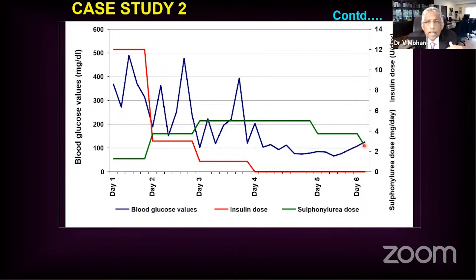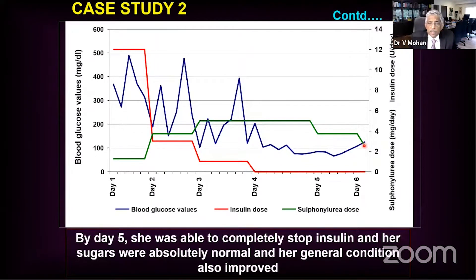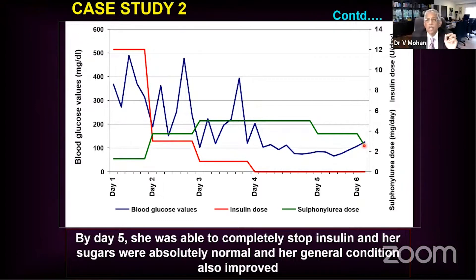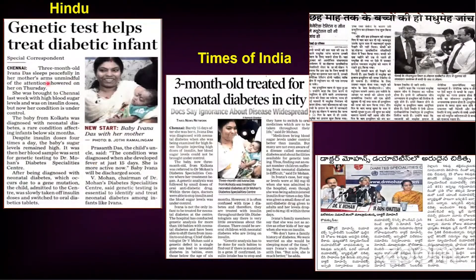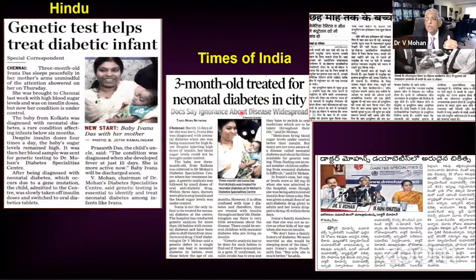Blood sugars settled to below 100 — beautifully controlled on very small doses of sulfonylurea. This is one of the most satisfying experiences in all of diabetes: a newborn child, you stop insulin, treat with sulfonylurea, and by day five sugars are absolutely normal. This child is now about eight years old and is still on the oral drug — she has not needed insulin for years. This made headlines and we held a press conference to make people aware that genetic testing can change treatment completely.